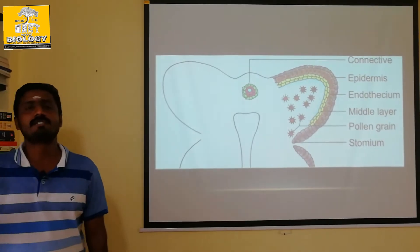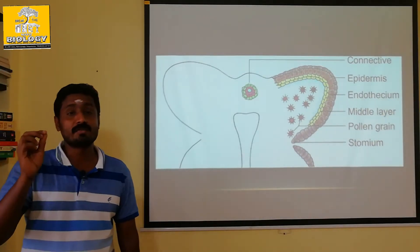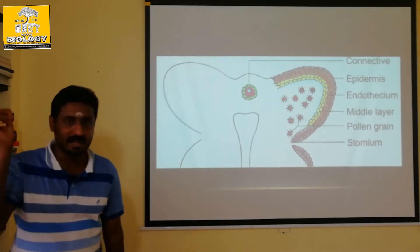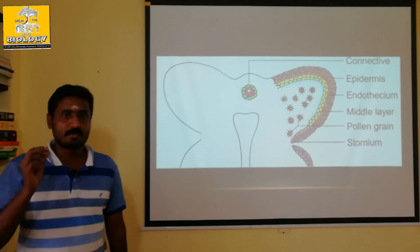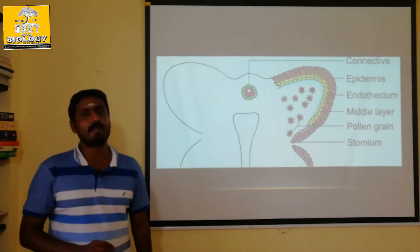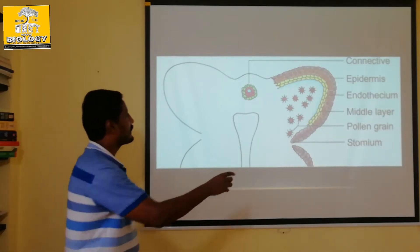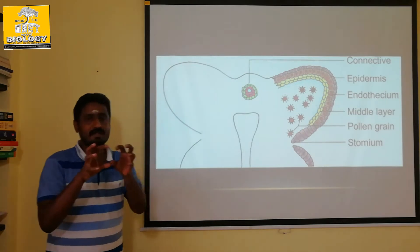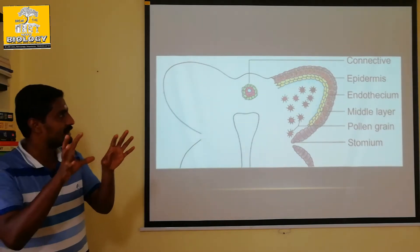It is sporingenous tissue. Microspores are formed within it. The microspores are formed from microspore mother cells. The microspore mother cells undergo meiotic division, and the microspores are formed. The microspores are called pollen grains. The pollen grains detach from each other and are spread.